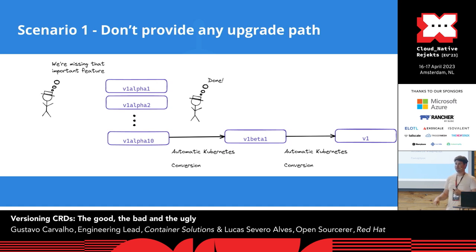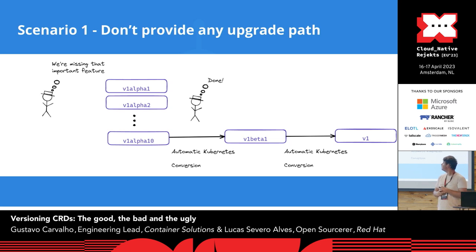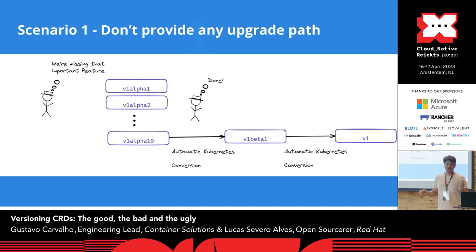How does the naive approach work? You go from V1 alpha 1, create a V1 alpha 2, break things, do this over and over again until you completely nail your domain. When everything is complete, you move from V1 alpha to beta and then to stable GA. My job here is done. My operator is complete.